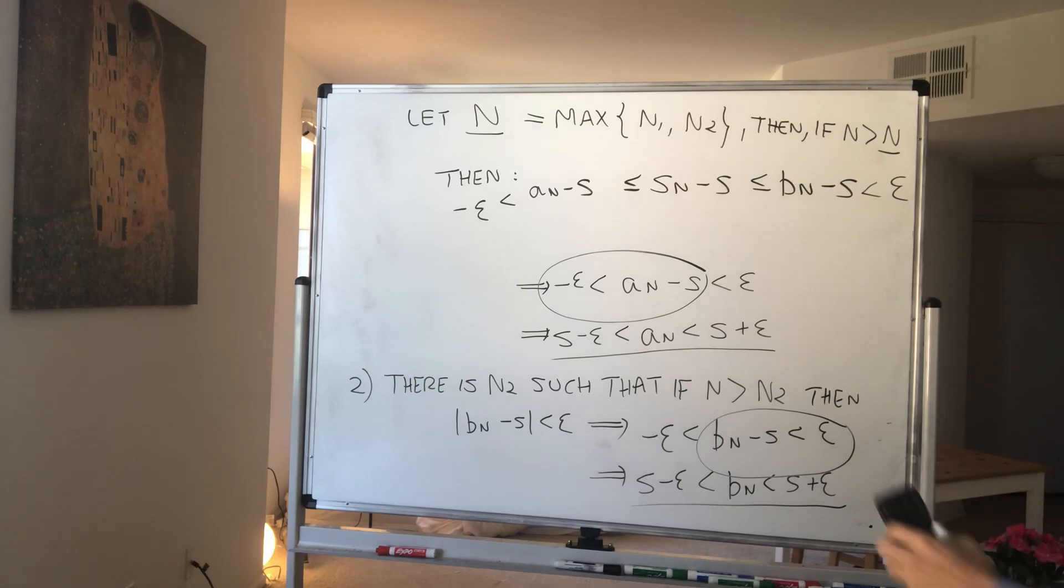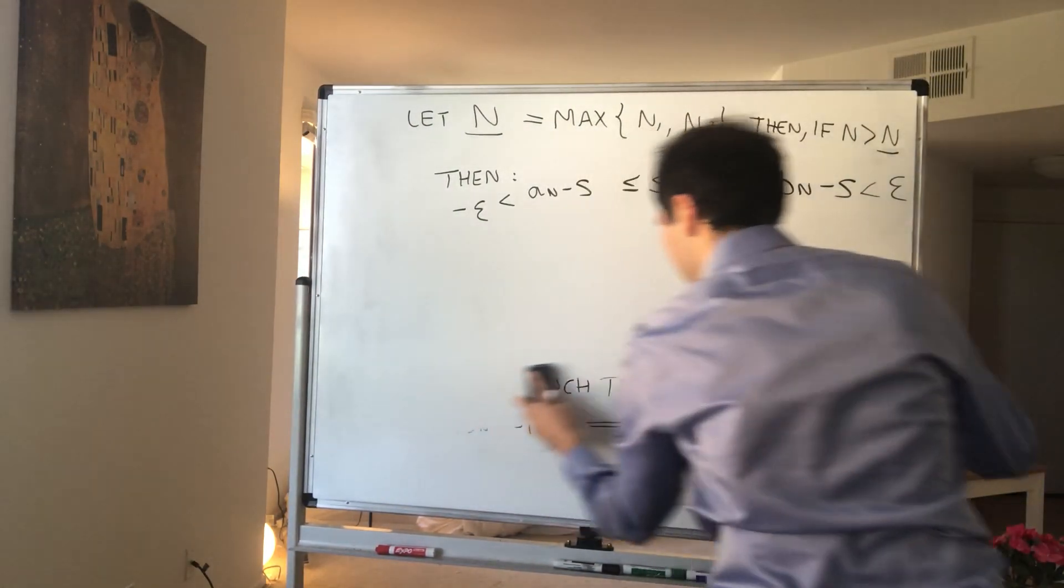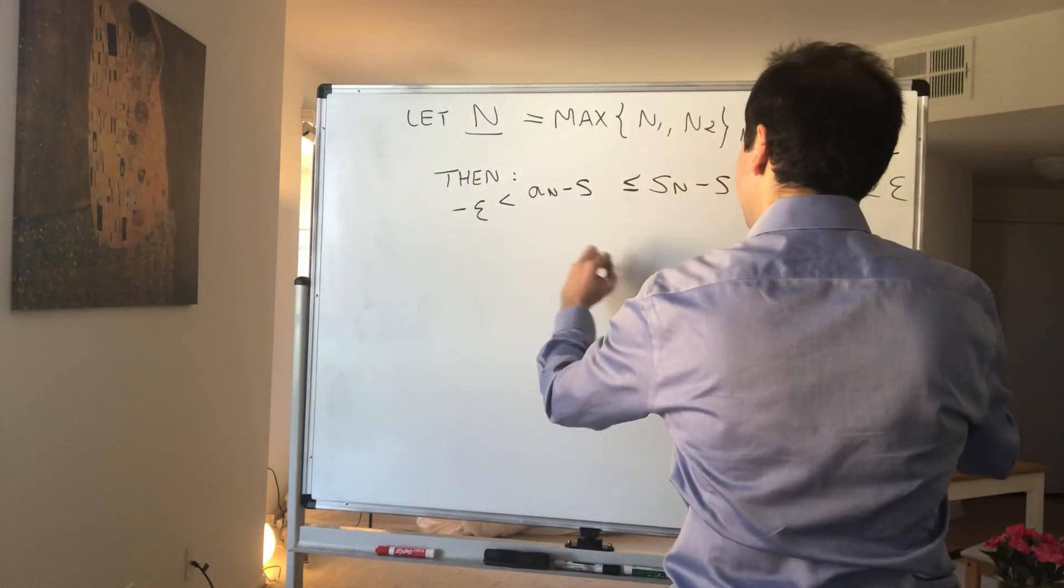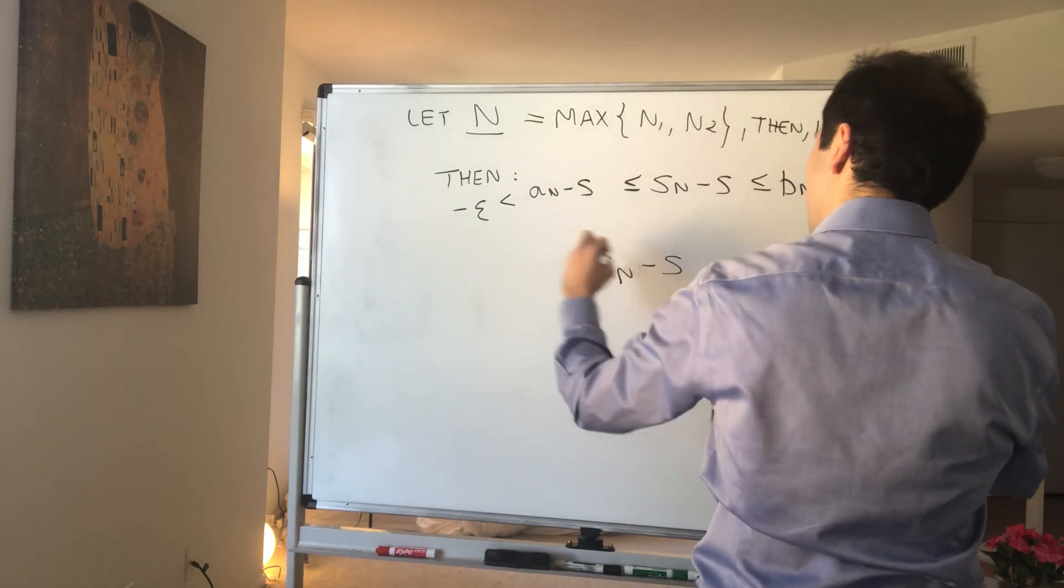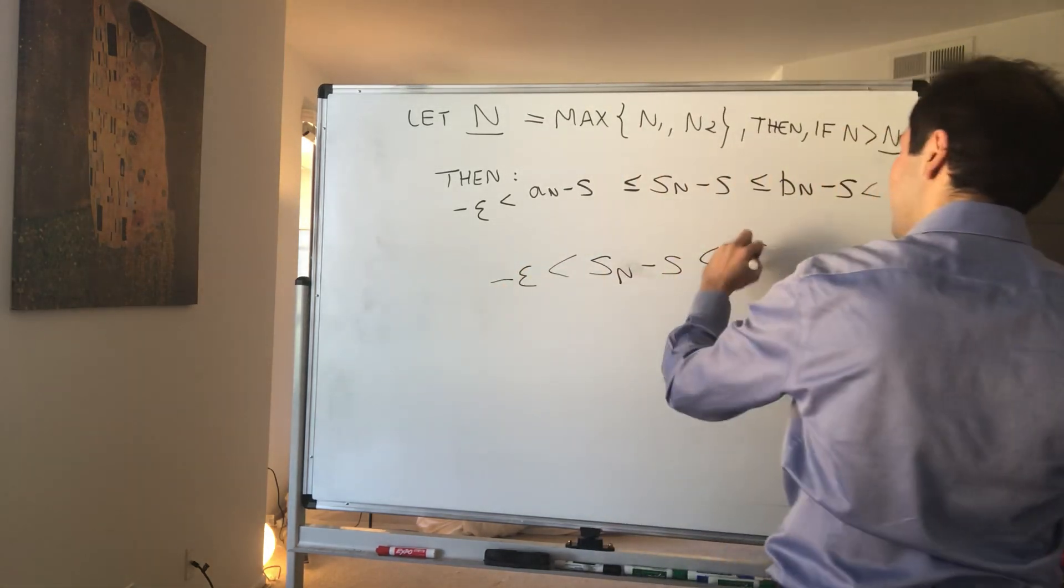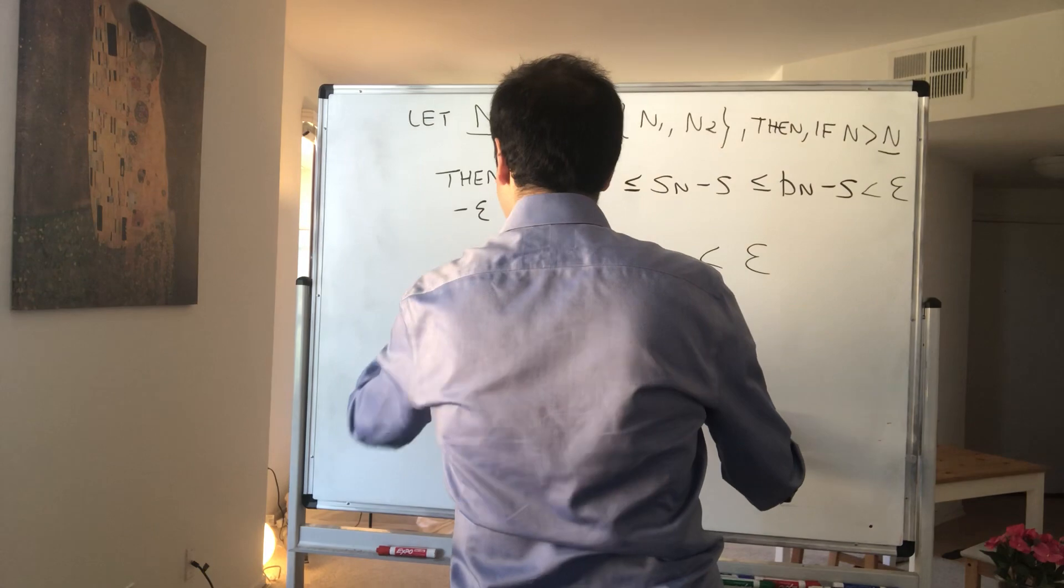So what do we get? We know that s_n minus s, well, that's squeezed between -epsilon and epsilon, but this is just the same thing as saying that the absolute value of s_n minus s is less than epsilon. And voila, you are done